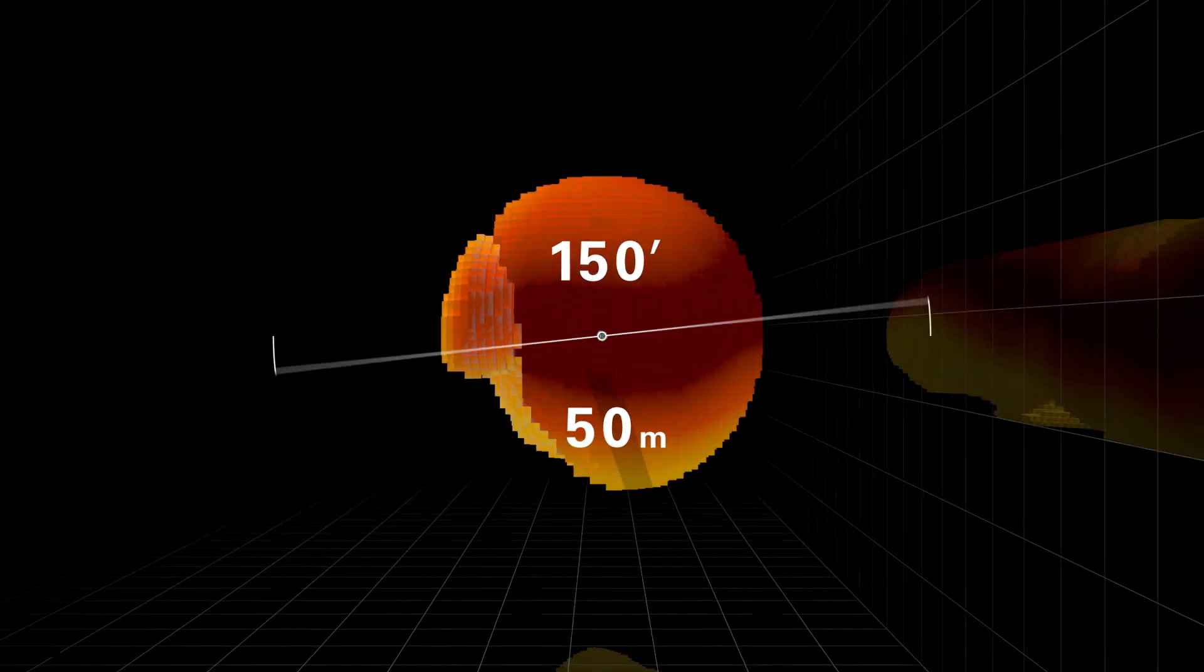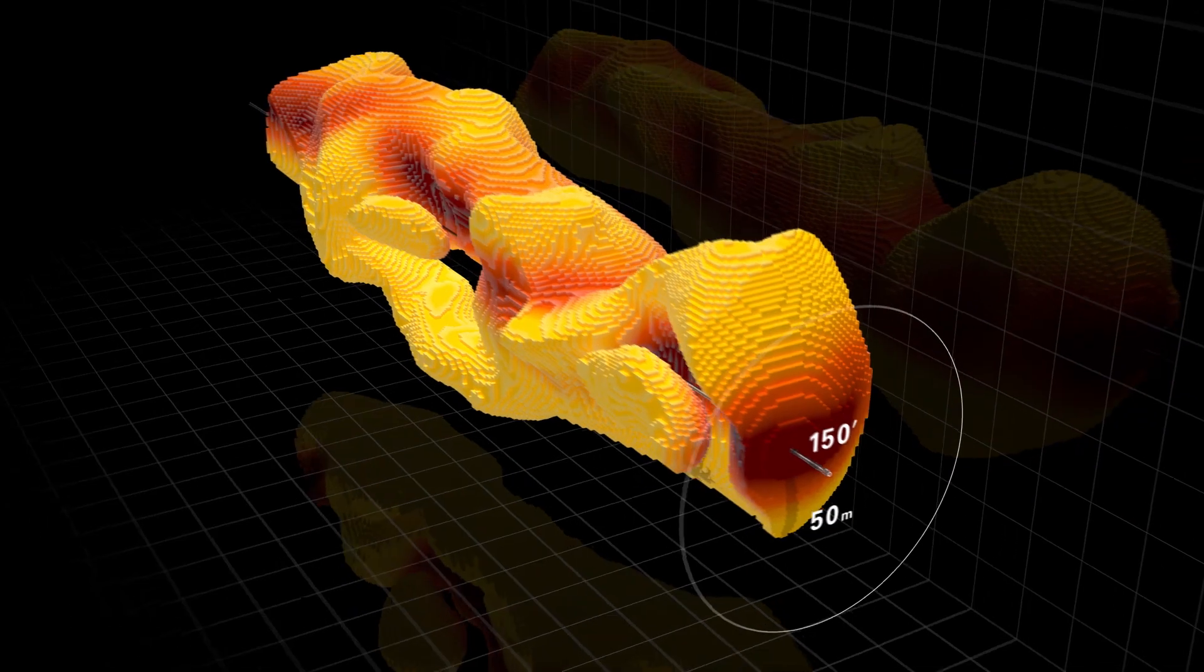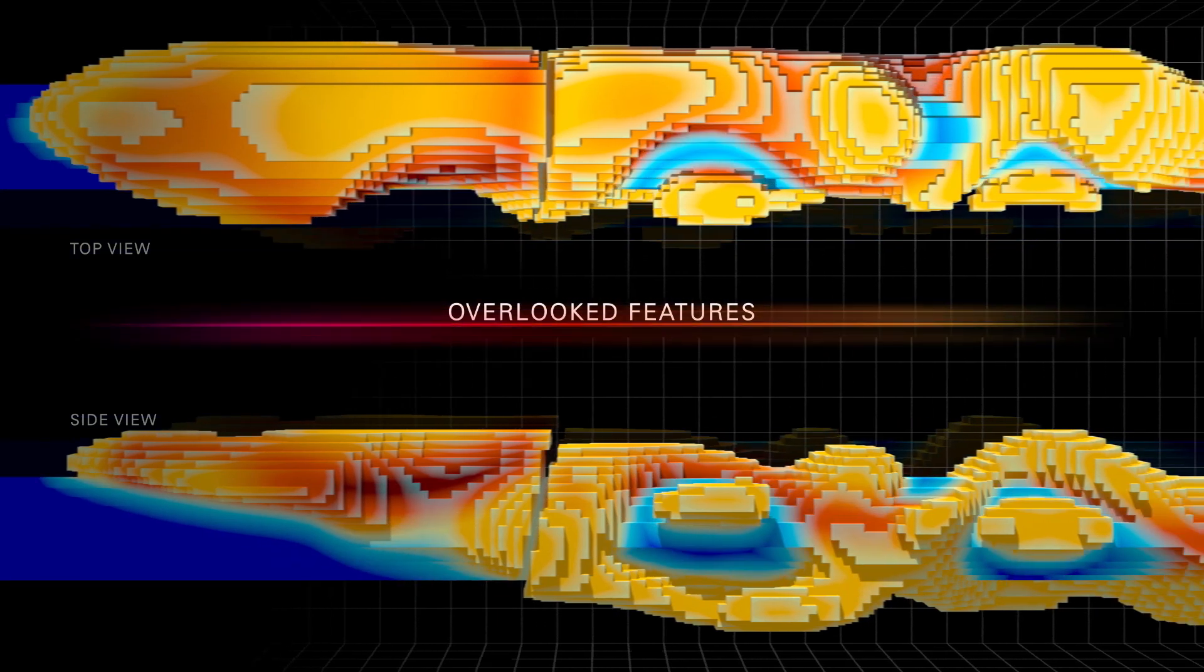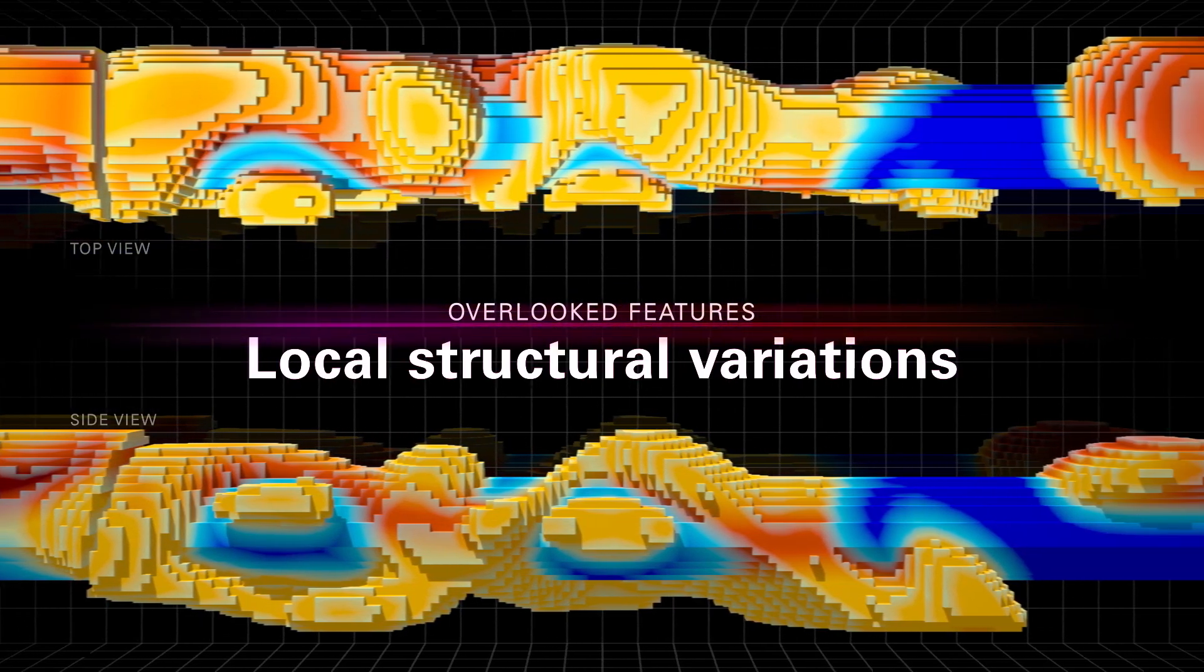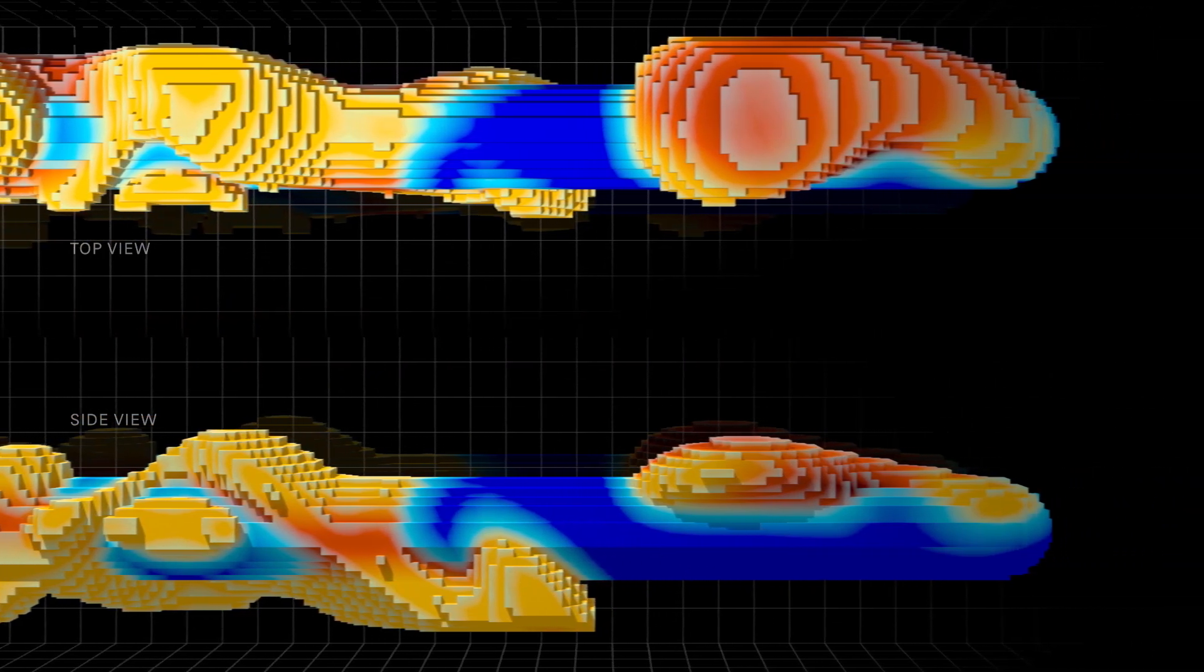3D inversion reveals overlooked features like faults, water zones, and local structural variations that can considerably alter the optimal placement of a well. Whatever your challenge—avoiding hazards, seismic uncertainty, optimizing production, or just staying in the zone—EarthStar 3D provides answers.